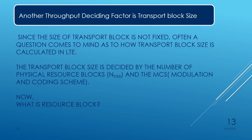Now the transport block size — this can be directly converted into throughput, so our goal is to find the transport block size. The transport block size is not a fixed value. The question then is: how is the transport block size decided? It is decided by two factors: the number of resource blocks allocated to a user, and the MCS value. These together decide the transport block size, which is effectively our throughput.